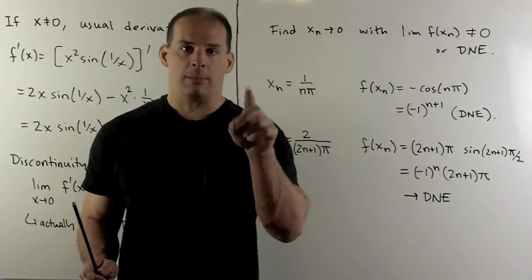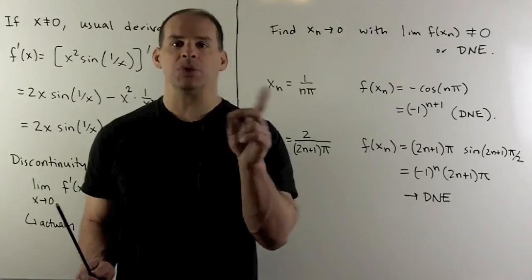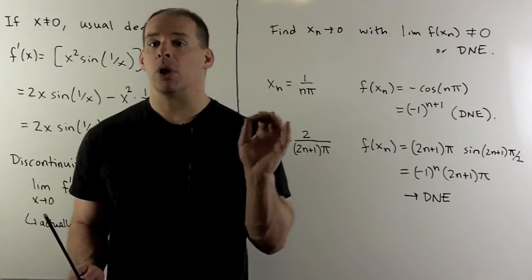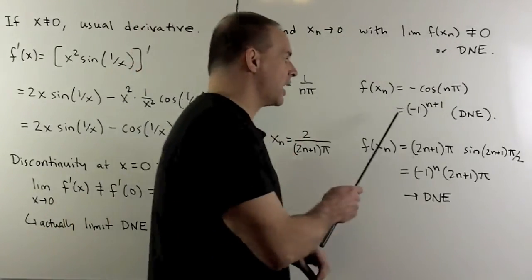Now, cosine at multiples of π, it's going to oscillate between -1 and 1. So the limit won't converge in this case. So it does not exist.